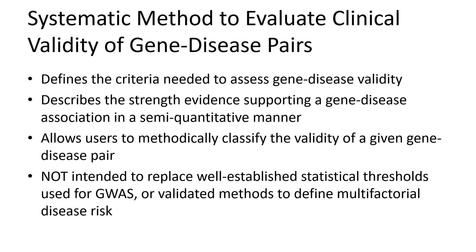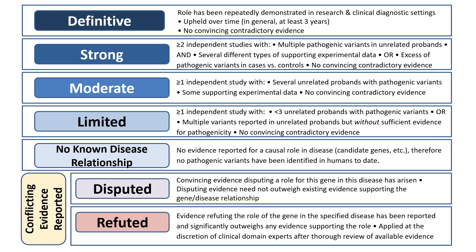We've developed a framework to standardize the approach to determine the clinical validity for a gene disease pair. This framework defines the criteria needed to assess clinical validity, quantifies the evidence supporting a gene disease association, and allows curators to use this information to methodically classify the validity of a given gene disease pair. This framework is currently optimized for genes associated with monogenic Mendelian disorders of reasonable penetrance. It is distinct from, and not meant to be a substitute for, the well-established statistical thresholds used for genome-wide association studies or validated methods to define multifactorial disease risk. Future iterations will expand the framework to consider the evaluation of oligogenic or multifactorial conditions. The classifications used are described in our 2017 publication in the American Journal of Human Genetics and are also available on our website, clinicalgenome.org.